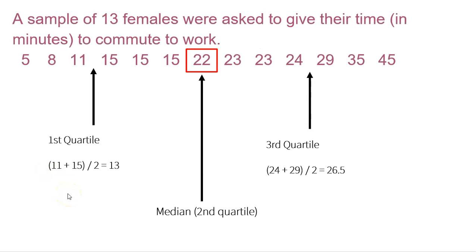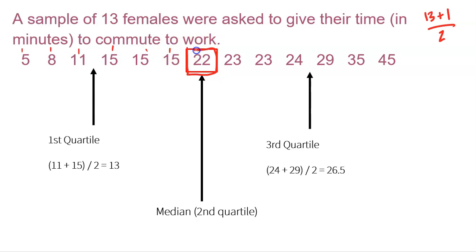Let's look at a set of data. A sample of 13 females were asked to give their commute time in minutes to work. With 13 values, I'm going to use the formula to find the location of the median: 13 plus 1 is 14, divided by 2 is 7. Counting to the seventh value, 22 is the median. Then the middle of the bottom is the first quartile — there are six values at the bottom, and the middle is right in between 11 and 15. So 11 and 15 is 26 divided by 2 is 13. So 13 is my first quartile. And the upper six values — the middle is between 24 and 29, add those together divided by two — gives us 26.5 as my third quartile.